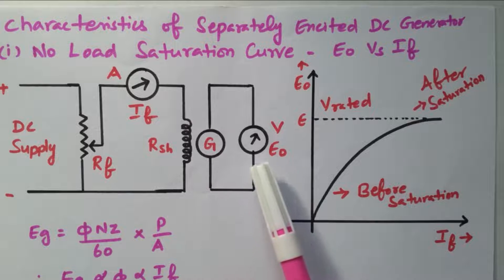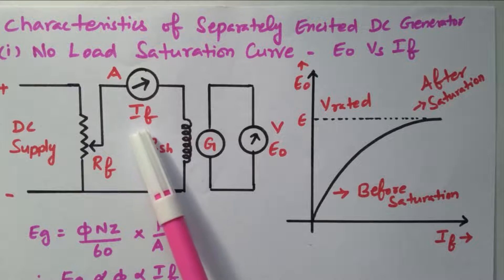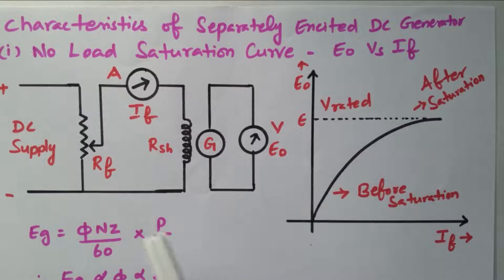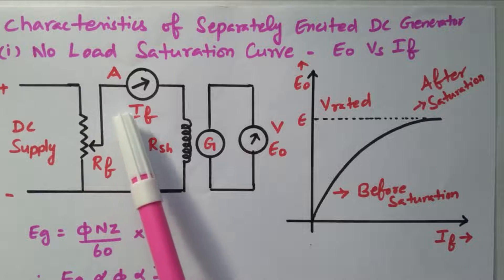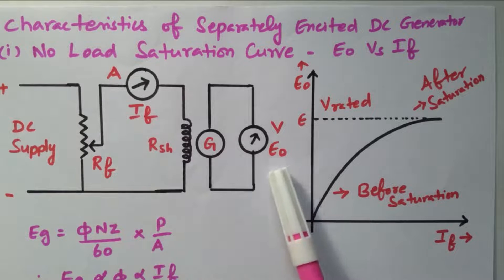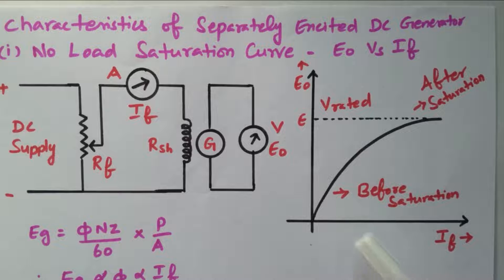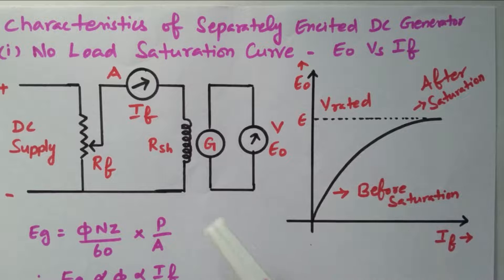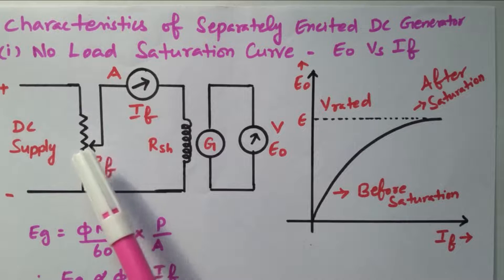The corresponding no-load voltage will be read by the voltmeter. We need to note down the ammeter reading and voltmeter reading — that is the value of field current IF and no-load voltage E-naught. Then slowly the IF value is increased by adjusting the rheostat. For every reading, we note down the value of IF and E-naught. From this set of values, we can draw the graph between field current and no-load EMF.